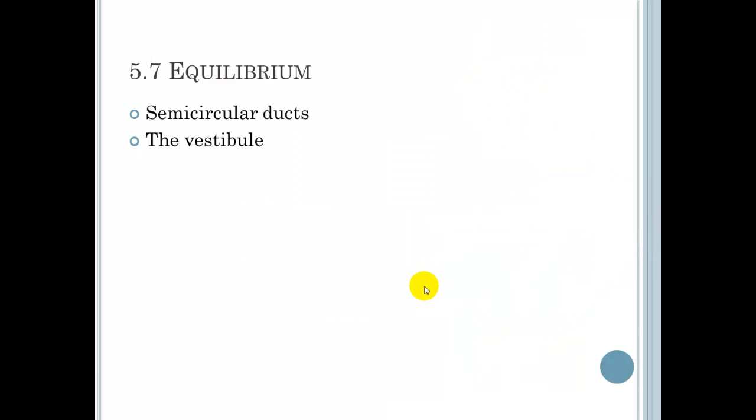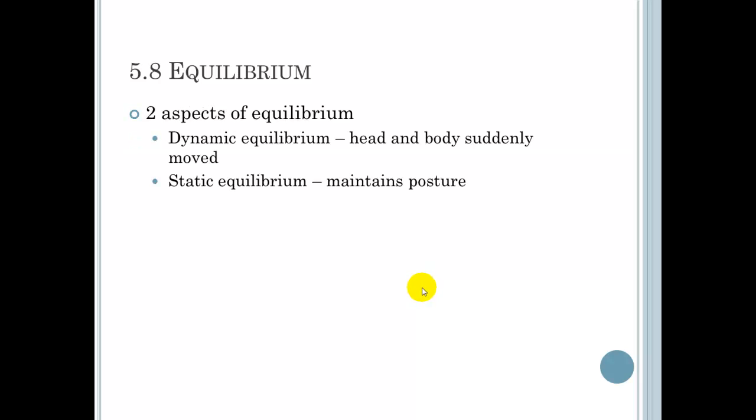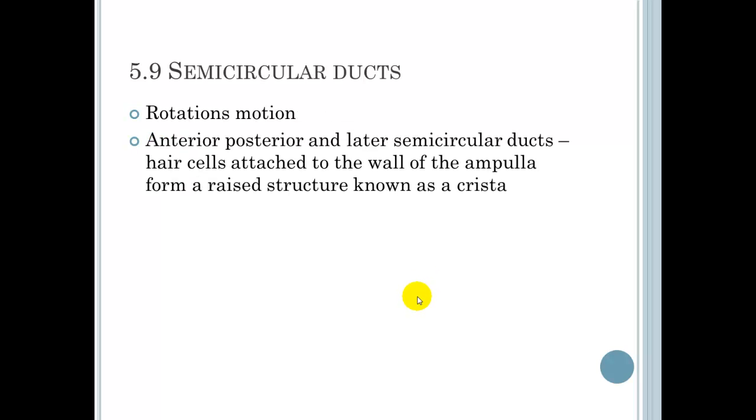5.7, equilibrium, semicircular ducts and the vestibule. Two aspects of equilibrium here. We have dynamic equilibrium, which is head and body suddenly moved. And then we have static equilibrium, which kind of maintains your posture. Without the static equilibrium, we would kind of tip over and fall on our face.